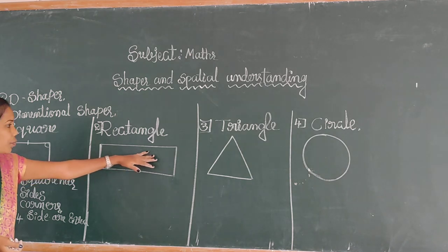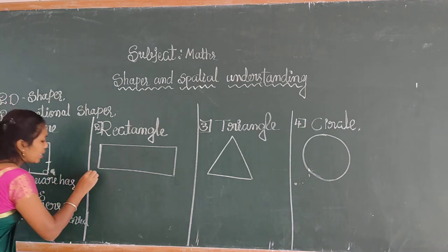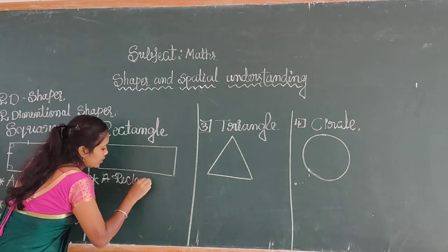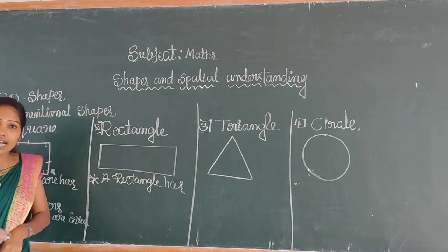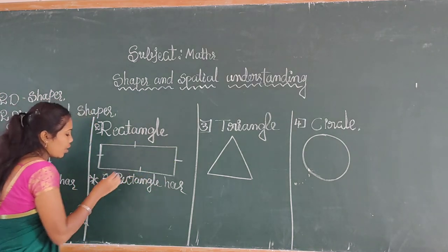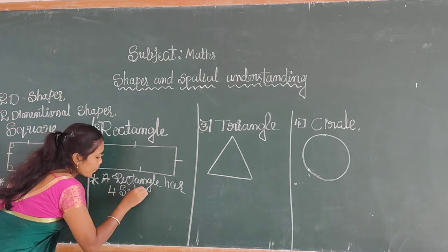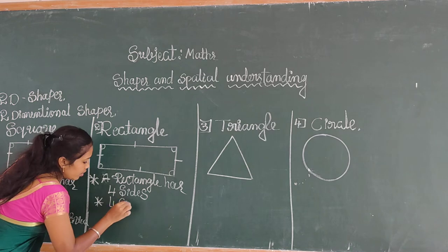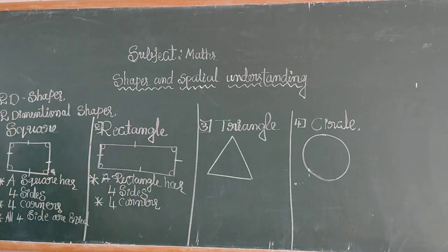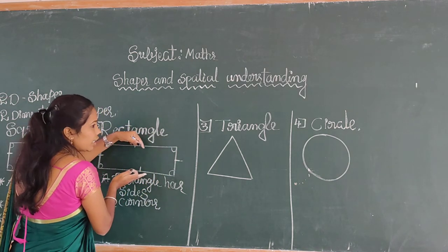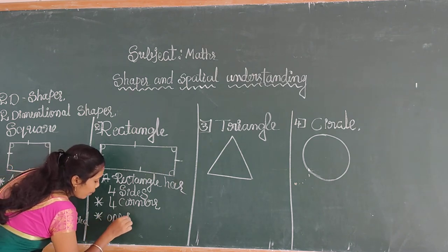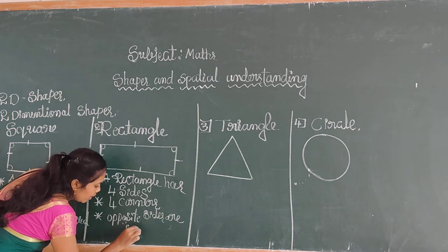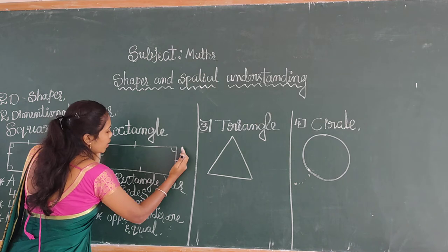Shall we go to the next shape? It's a rectangle. A rectangle has how many sides? 1, 2, 3, 4 — there are 4 sides. There are also 4 corners. In a rectangle, the opposite sides are equal.